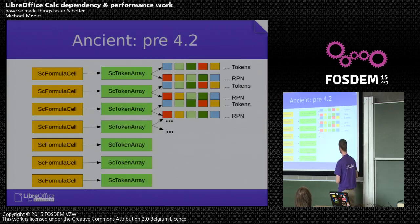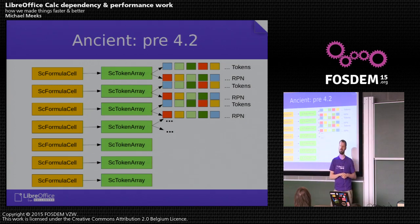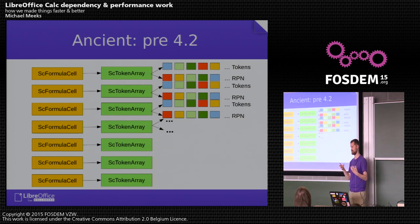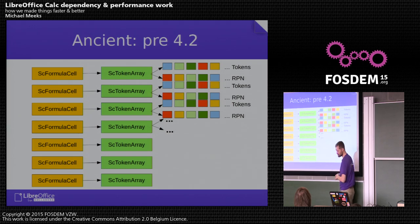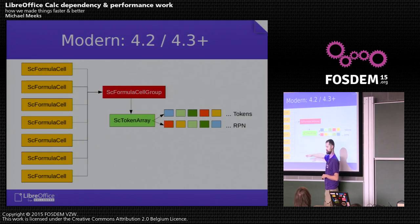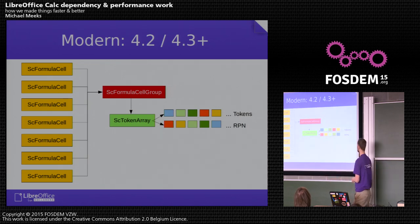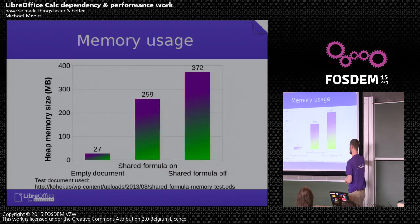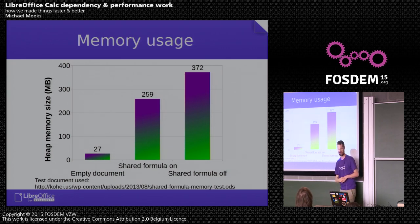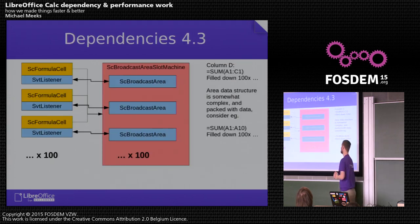The other thing we did was share formulas. Previously, each cell had its own copy of the formula. Often in spreadsheets you fill a column down — 100,000 formulae all basically the same. We would copy the formula tokens for each one, allocated all over memory. Now we only do it once. For all similar cells down a group, we have a single token array representing the formulae in reverse Polish notation. That had a huge impact on memory usage — about 30% plus savings for a sample document, which is quite useful.